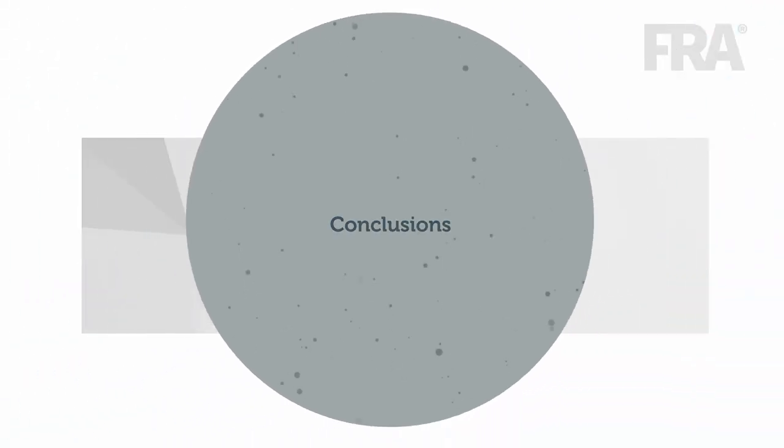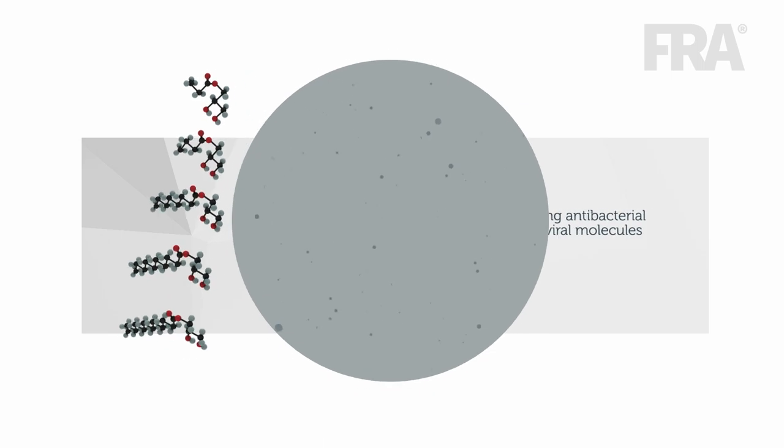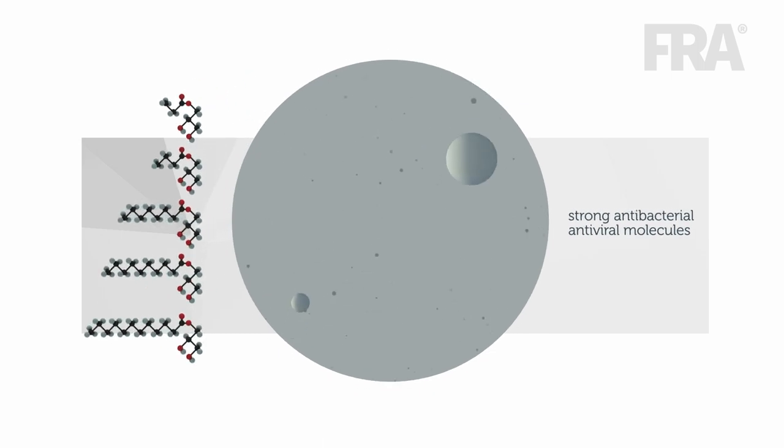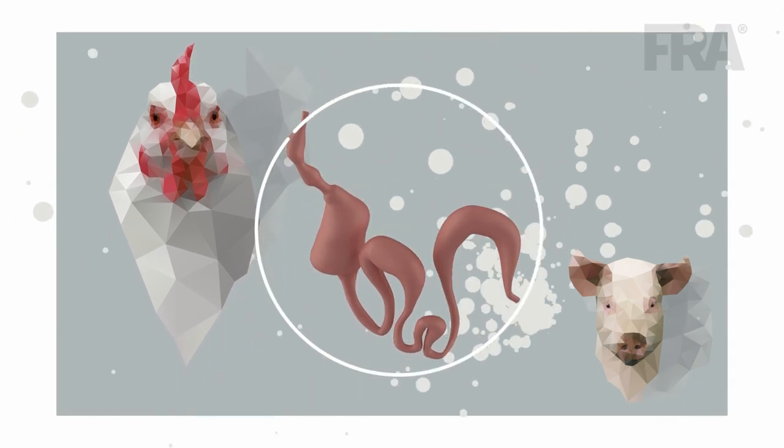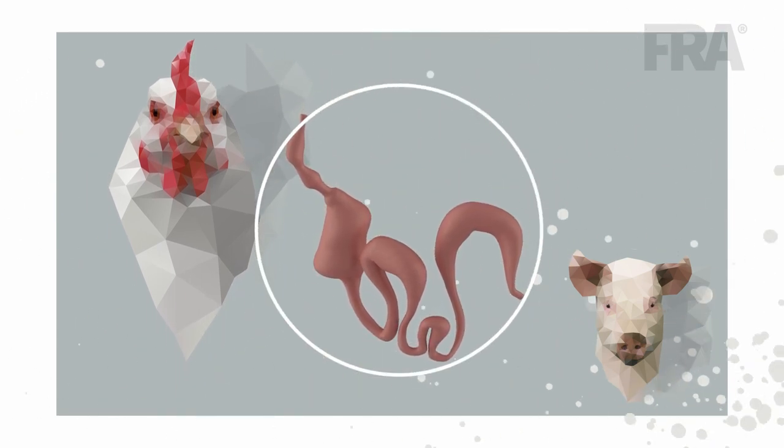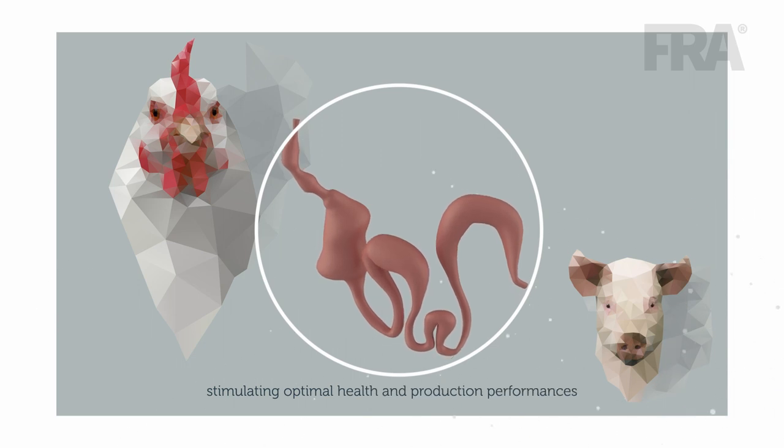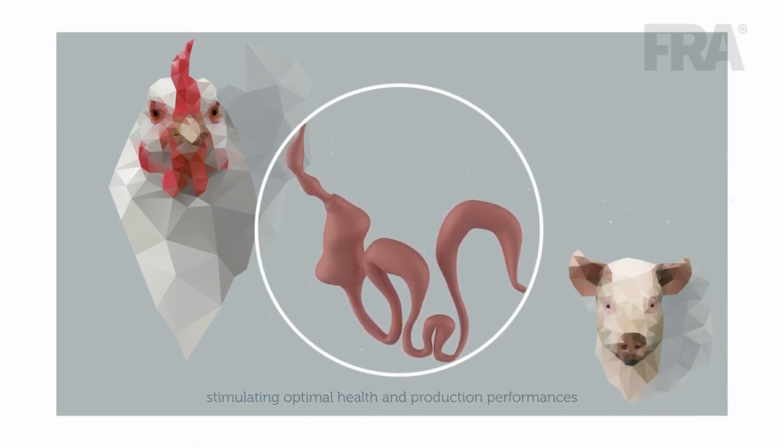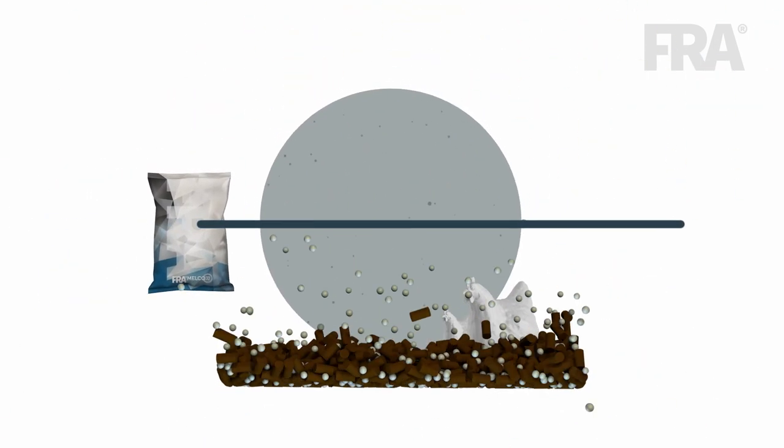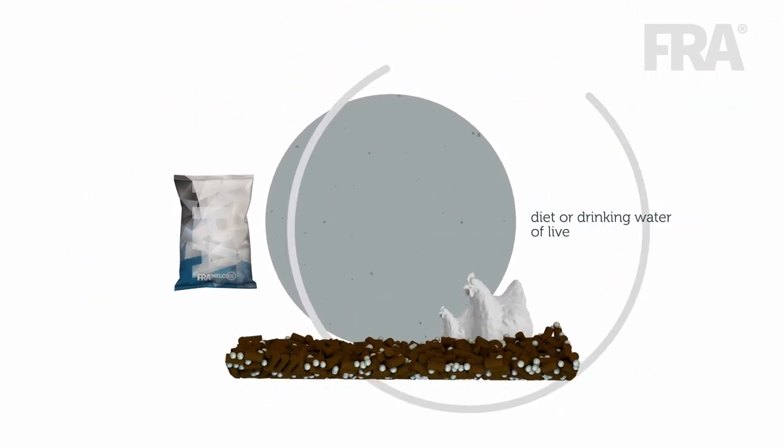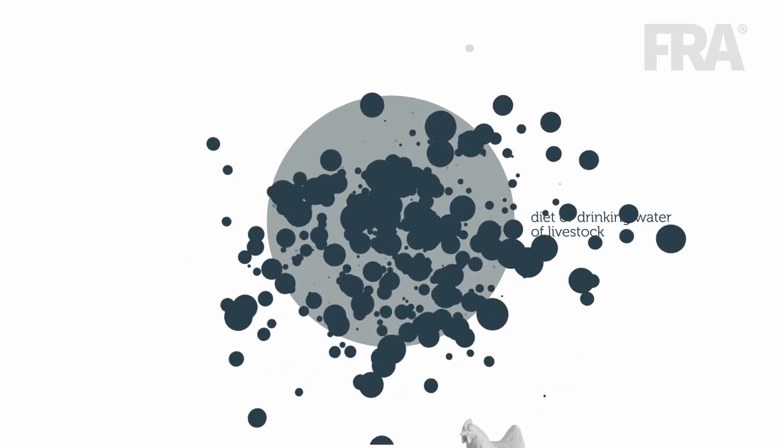Alpha-monoglycerides have shown to be strong antibacterial and antiviral molecules. The alpha-monoglycerides are active in the entire gastrointestinal tract of the animal, stimulating optimal health and production performances. Moreover, alpha-monoglyceride-based products of Fra-Melco can be included in the diet or drinking water of livestock.